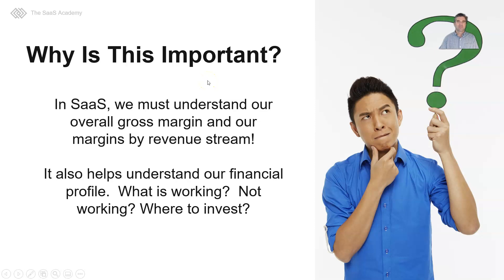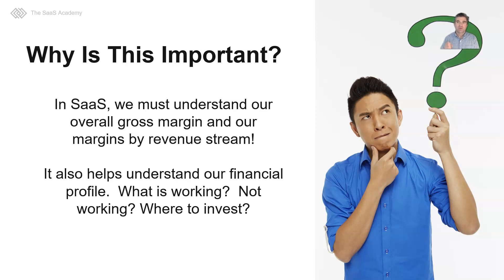So why is it important to understand COGS versus OPEX and get that expense coding correct in our P&L? Well, in SaaS, we must understand our overall gross margin and our margins by revenue stream. It also helps us understand our financial profile, which is key — what is working, what is not working, and where we should invest in our P&L to improve revenue, gross margins, and our OPEX profile.